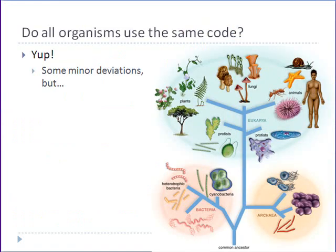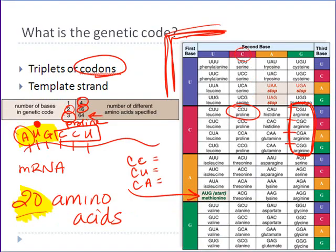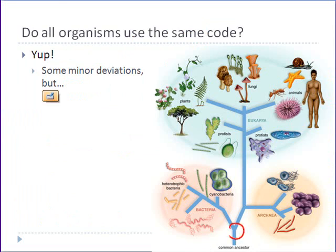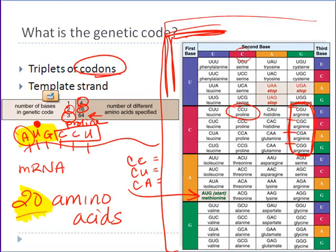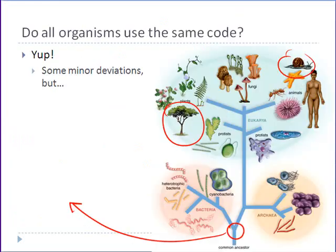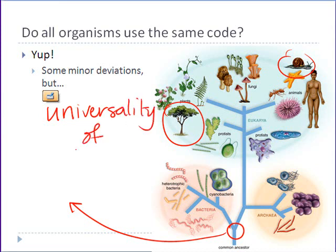Do all organisms use this same codon table? The answer is yes, and that is one of the reasons why we know for certain that we are all — whether a bacterial cell, a snail, a human being, or a tree — all derived from the same common ancestor from about 3.2 billion years ago. Whatever that common ancestor was, it utilized this basic codon chart, and it doesn't matter what kind of organism we're looking at today, they all use that same sequence of codons. This is called the universality of the genetic code.